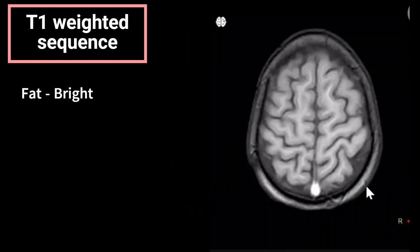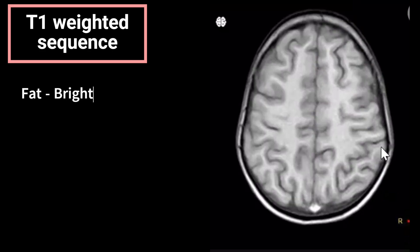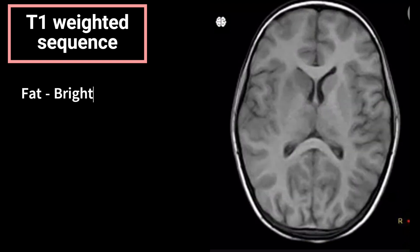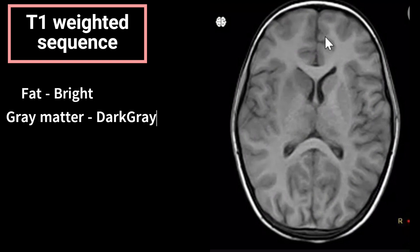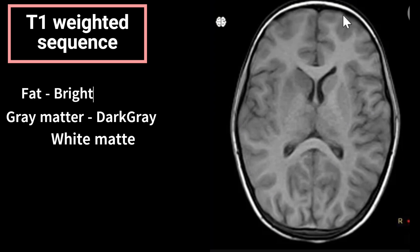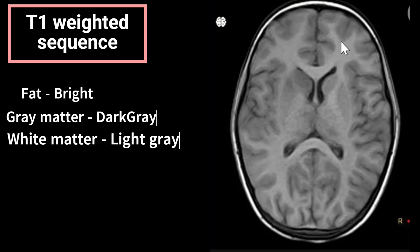To identify a T1 weighted sequence: fat appears bright on T1. Here you can see the subcutaneous fat in the scalp is bright or hyper-intense. Coming to lower sections, we can see gray matter and white matter. Gray matter here is the outer cortex appearing dark gray — we'll trace it along the cortex, which is very well defined on the T1 weighted sequence.